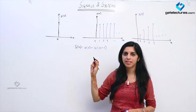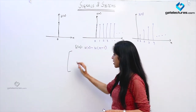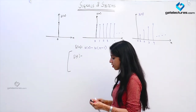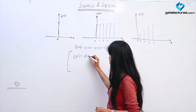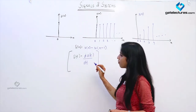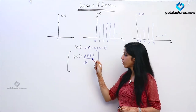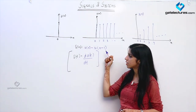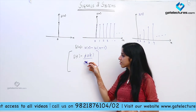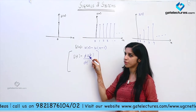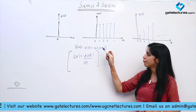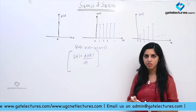We have already seen that in the continuous domain, δ(t) was equal to the differentiation of u(t) with respect to t. Now, when we change from continuous time domain to discrete time domain, differentiation converts to difference. In the continuous time domain we had differentiation of the unit step signal; in the discrete time domain we have the difference of unit step signals.